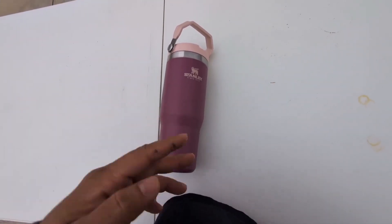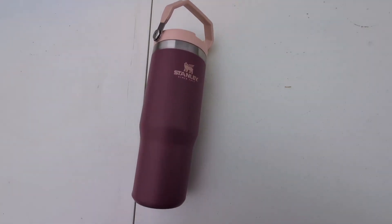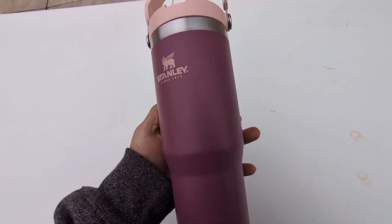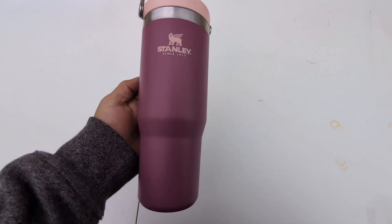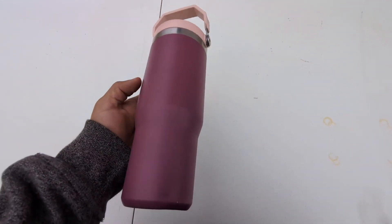Hey everyone, so here we have my Stanley Ice Flow Stainless Steel Tumbler with Straw. This is the 30 ounce bottle as you can see here.